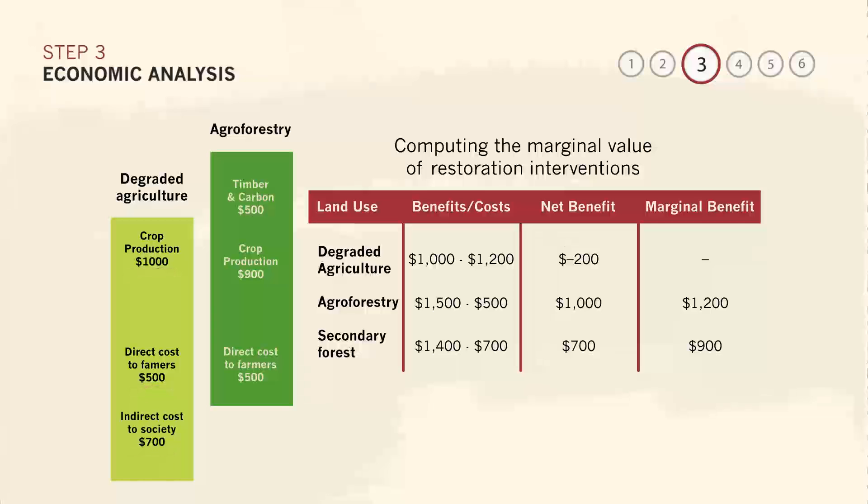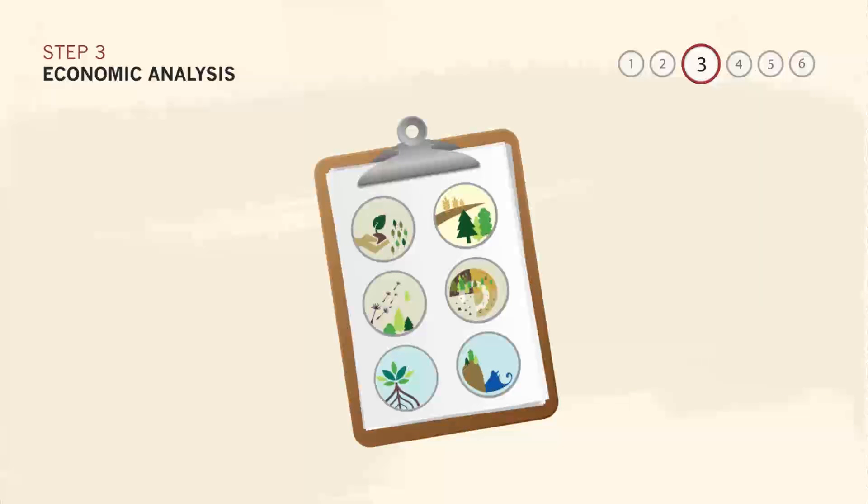If we were to restore with agroforestry techniques, crop values drop but we gain new value from timber production. The negative costs to society from depleted soil disappear as the agroforestry restoration preserves this important resource. An economic analysis is complete when you have estimated the marginal costs and benefits of each of your priority restoration activities and have validated this information with existing stakeholders.